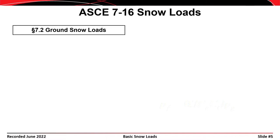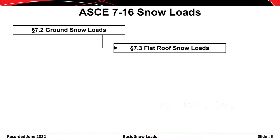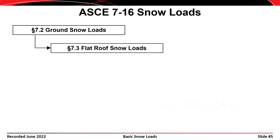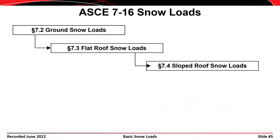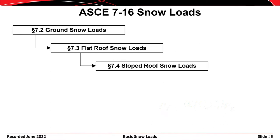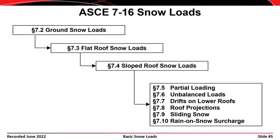The process for determining the amount of snow load on a structure starts with knowing how much snow load is on the ground at the structure's location, covered in section 7.2 of ASCE 7. After that, we determine the flat roof snow load. For flat roofs, that's the end of the problem. Then we determine the snow load on a sloped roof. Finally, we cover advanced topics including partial loading, unbalanced loads, drifts, roof projections, sliding snow, and rain-on-snow surcharges. This presentation covers the first three steps; the fourth will be addressed separately.